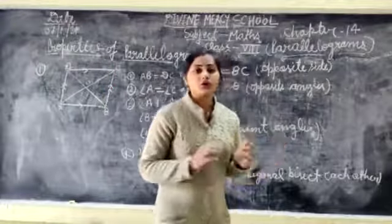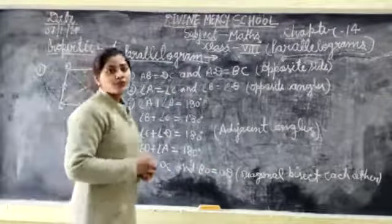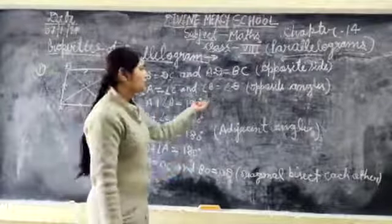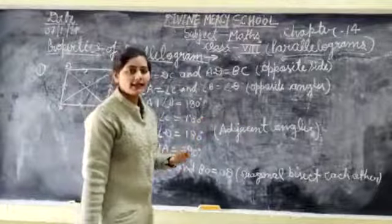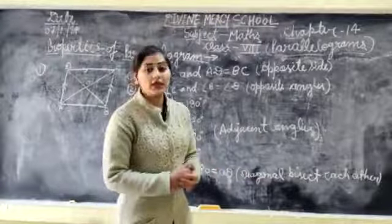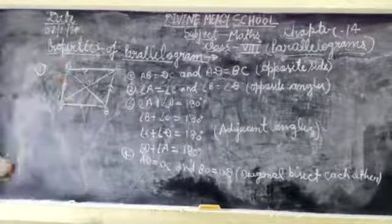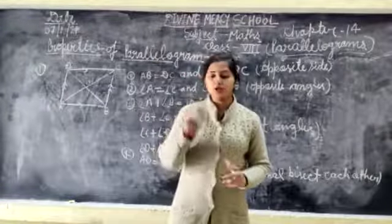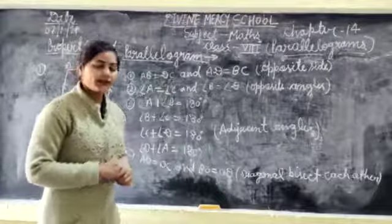So these four properties are the properties of a parallelogram. When questions are given to you, remember: opposite sides are equal, opposite angles are equal, adjacent angles sum to 180 degrees, and diagonals bisect each other. Note these four properties down and keep them in mind. Thank you and have a nice day.